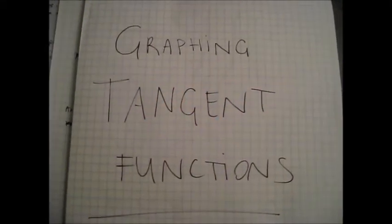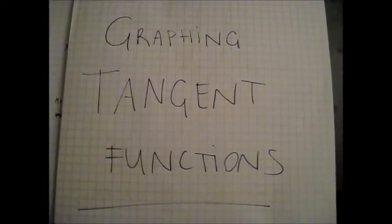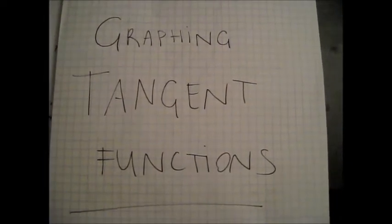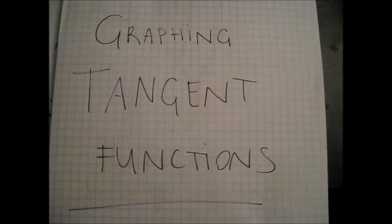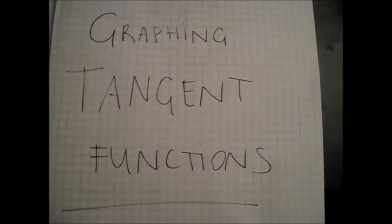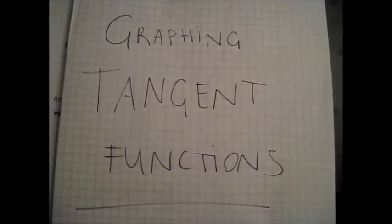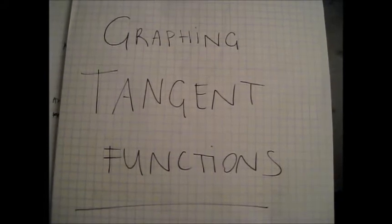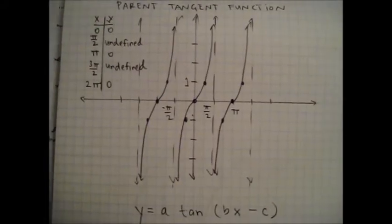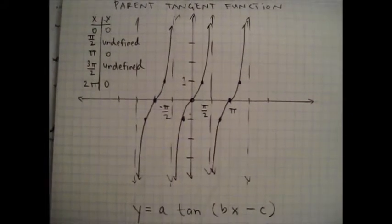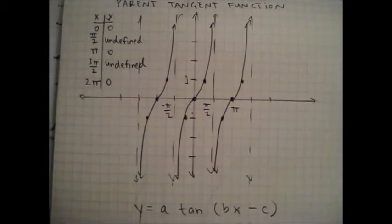In this video, I teach you how to graph tangent functions. Sketching a tangent function is a little different than your usual sine and cosine functions. Instead of finding a minimum, maximum, and intercepts, you need to find the asymptotes and intercepts. This is a graph of a parent tangent function. As you can see, it is more difficult to graph than a sine or cosine function.